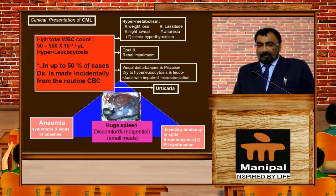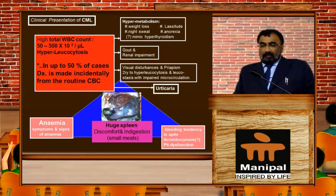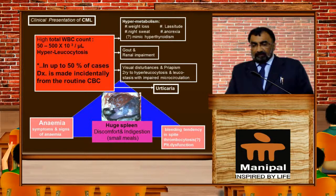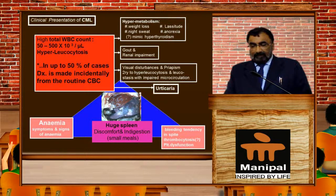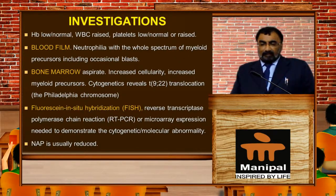Due to hypermetabolism, there will be weight loss, lassitude, night sweats, and anorexia — mimicking a hyperthyroid state. Total WBC count will be quite high, that is hyperleukocytosis. Up to 50% of cases are diagnosed incidentally from routine CBC. There may be presentations mimicking gout, renal impairment, visual disturbances, and priapism. There can also be hyperleukocytosis with leukostasis causing impaired microcirculation, urticarial patches, and bleeding tendencies and thrombocytopenia.